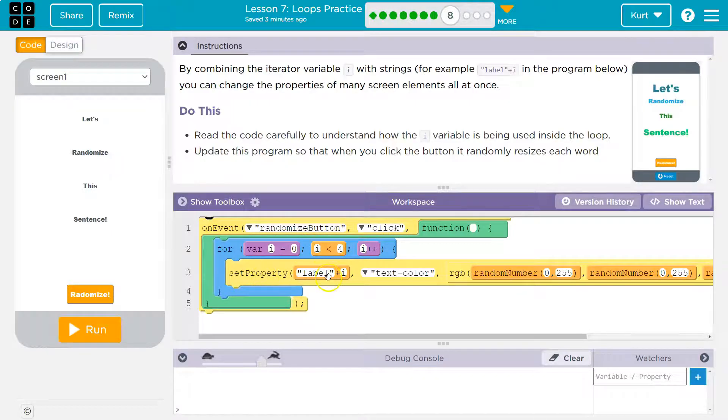And it dips down and runs this code again. i is 1. Label 1, it must be. Label 1. Text color. Random color. i was equal to 1. 1 plus 1 is 2. Is 2 less than 4? Yes. So label 4. And it keeps going until we get to i of 4, and then it stops, which is good, because there's only up to label 3.